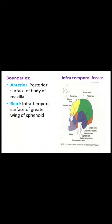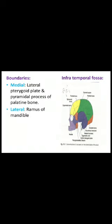Now talking about the Infratemporal Fossa. Boundaries: anteriorly, the posterior surface of the body of the maxilla. The roof is formed by the infratemporal surface of the greater wing of the sphenoid. The medial wall is formed by the lateral pterygoid plate and the pyramidal process of the palatine bone. The lateral wall is formed by the ramus of the mandible.